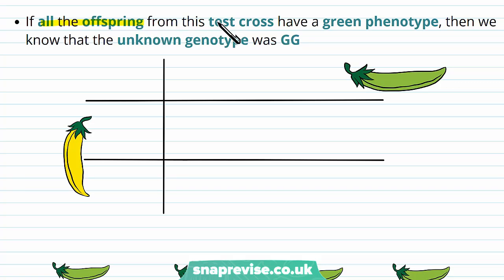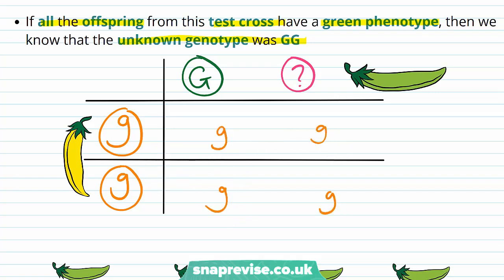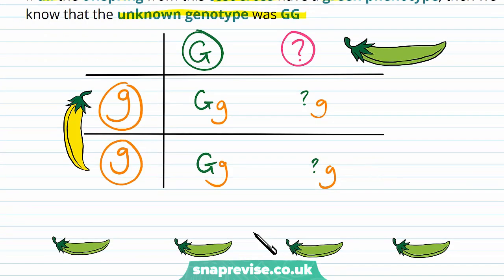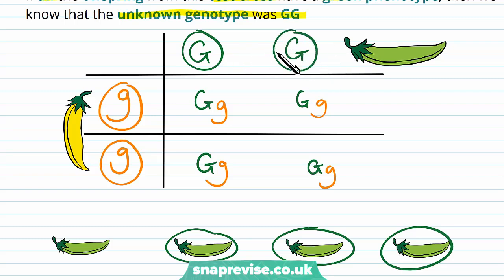If all of the offspring from this test cross have a green phenotype, then we can look back and know that the unknown genotype was capital G, capital G. The yellow one contributes little g gametes, and since every offspring turns out green, these offspring must all be large G, little g — meaning the unknown parent's second allele had to be large G. So because all of them turn out green, we know the original pea pod must have been homozygous dominant.